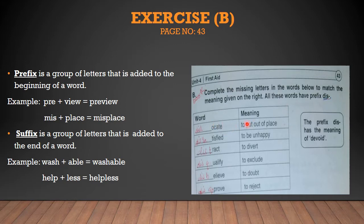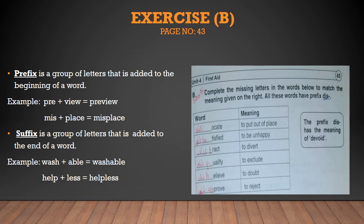Here are the word meanings. You all have to find out the word with the help of the clue — with the help of the meaning. Number one is 'to put out of place.' Here are written some letters: O, C, A, T, E. So you have to find out the word with the prefix. The answer is 'dislocate.' The other ones will be done by yourself like this. It is very easy — I know that you all can do it easily.